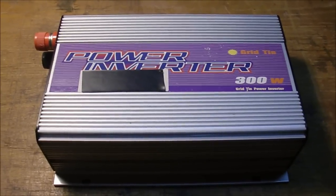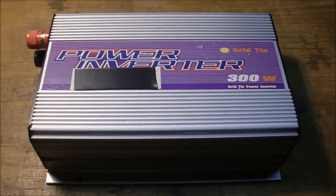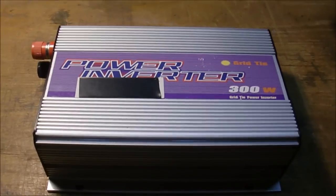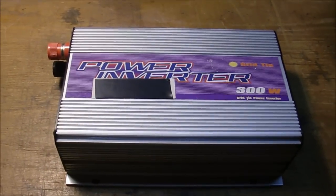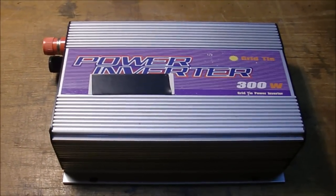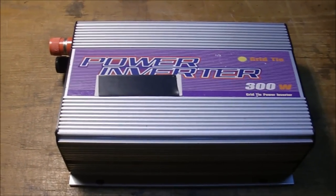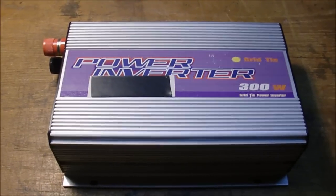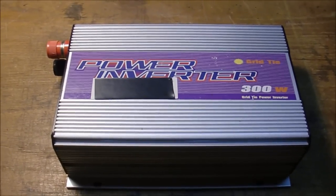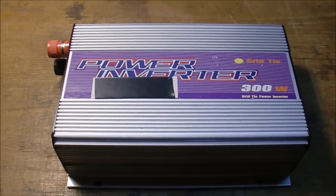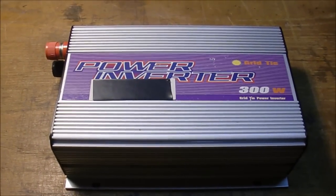It's a 10.5 to 30 volt grid tie inverter. It's one you might have seen on another channel that basically almost caught fire because of an over voltage using it with a wind turbine. So let's take a look inside and see what damage there is and see if we can repair it.